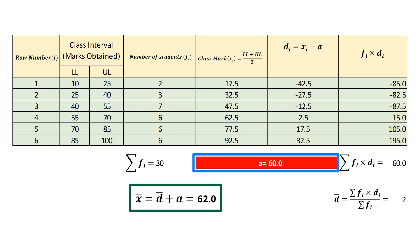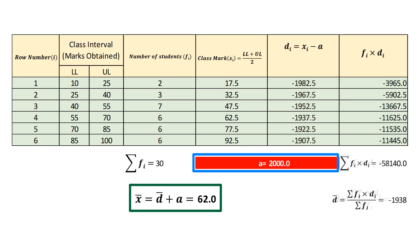This time let us take some really big number. Suppose a equals 2000, we get the same value of mean again.